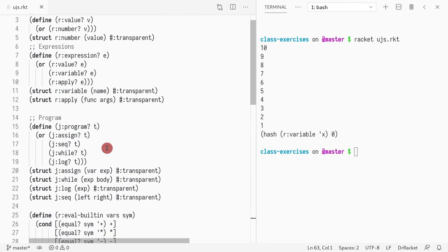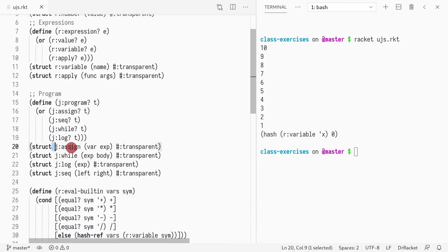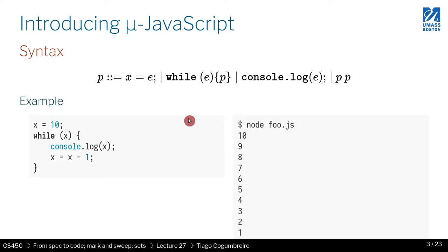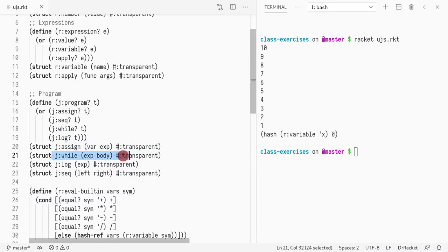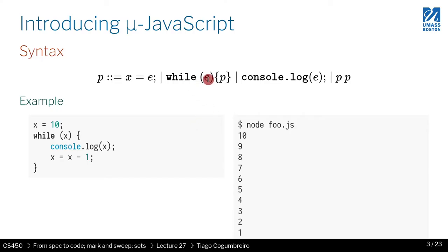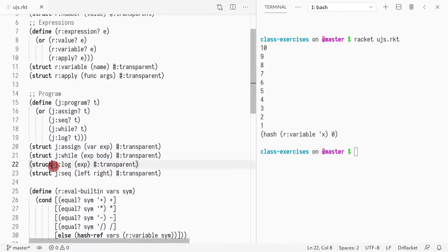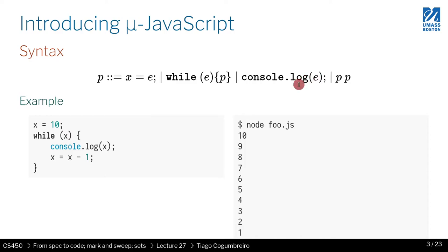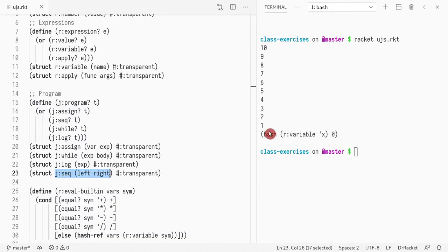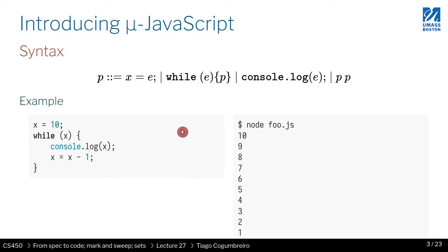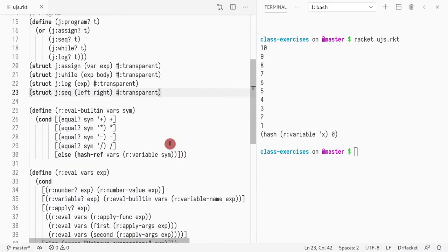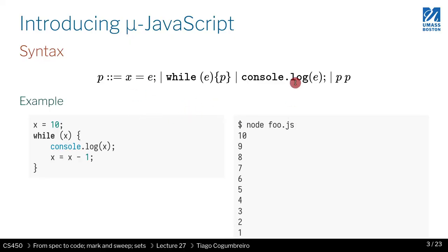Let me show you the AST. We're going to have an assignment — a variable and an expression. Then a while — an expression and the body. The log just takes an expression. The sequence takes a left and a right. You're not actually expected to write the AST — that's usually given — except for homework 3, where you're supposed to implement booleans.